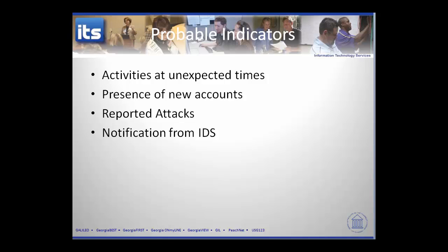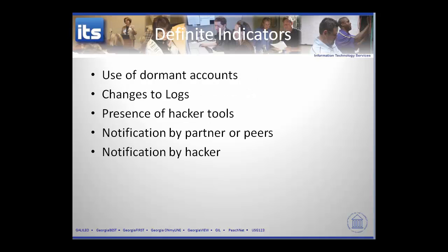Definite indicators that you have an attack include dormant user accounts that become active, changes to any of the logs — hackers typically try to alter logs to erase evidence of their presence — and the presence of hacker tools on your computer. Notification by a partner or peer that you're attacking them is also a definite indicator, as is a notification from the hacker themselves. These are definite signs that an attack is underway and you need to take action.